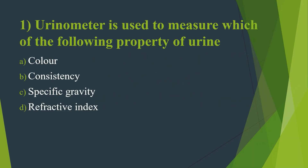First question: Urinometry is used to measure which of the following property of urine? Option A, Color. Option B, Consistency. Option C, Specific Gravity. Option D, Refractive Index. Answer is Option C, Specific Gravity.